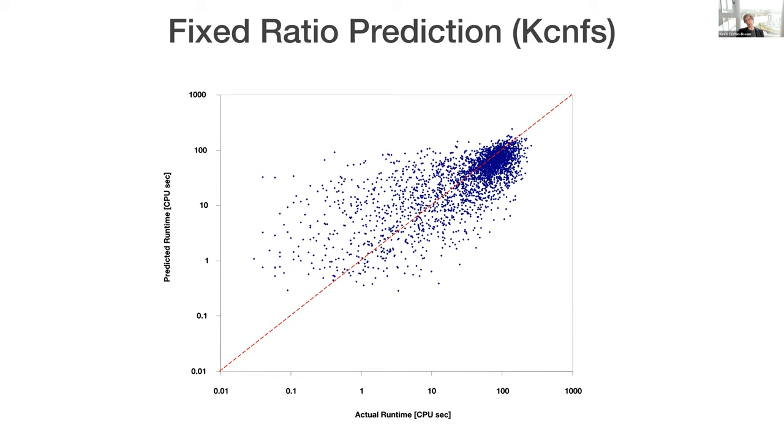So then using pretty simple regression kinds of methods, we were able to build models that make predictions like this. So here, I'm saying on the x-axis, what was the actual runtime on a log scale of a SAT solver like KCNFs? And on the y-axis, what do we predict the runtime to be? And we would like to exactly nail this diagonal red line. And what we got here was pretty good. We're able to do reasonably well in predicting unseen problems at the phase transition point, where the clauses to variables ratio is telling us nothing.